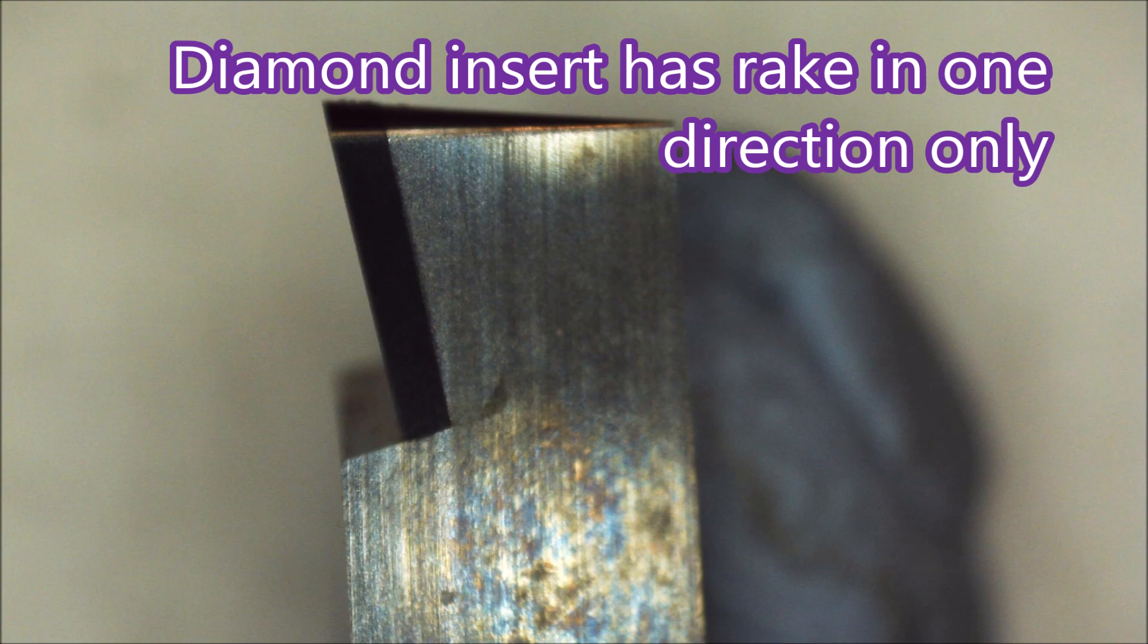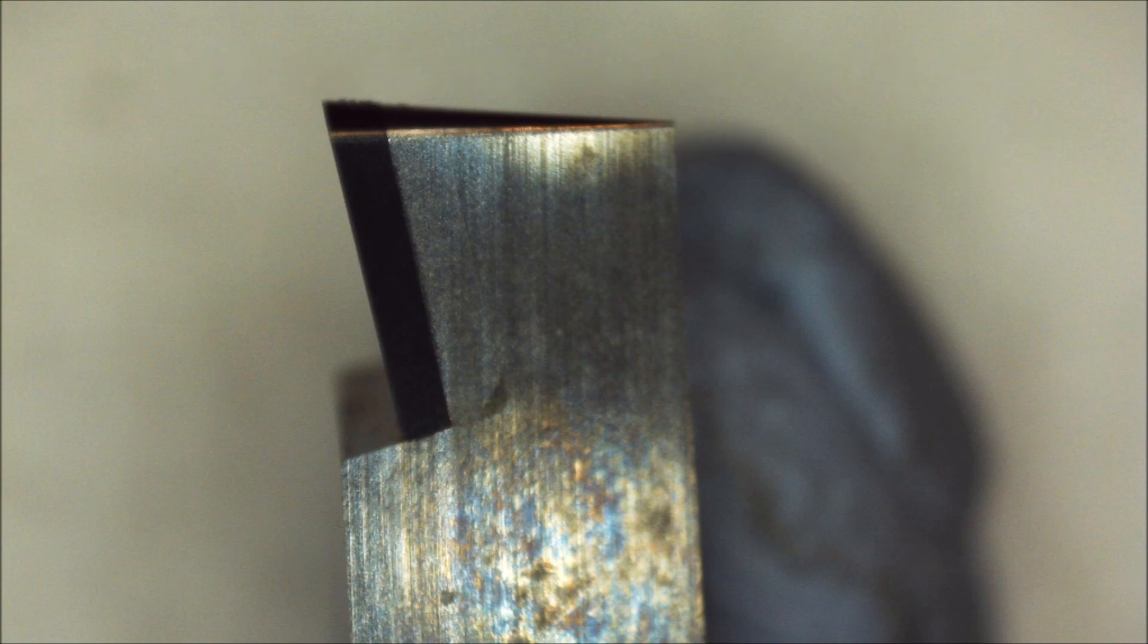When you look at a diamond insert, it has rake in one direction only. If you're going to turn from center to the OD, that's almost going to be negative rake at work because the insert's flat has rake in one direction only.